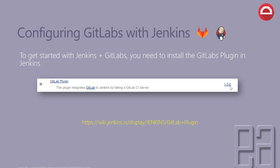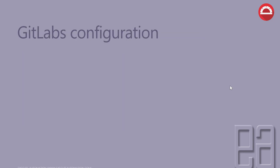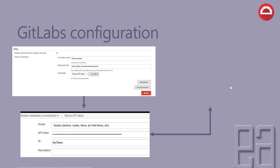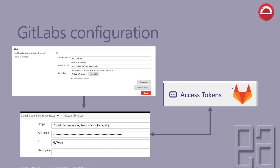To get started with Jenkins and GitLab, you need to install the GitLab plugin within Jenkins under the Manage Jenkins option. Configuring GitLab is much easier as well — all you have to do is create a git connection by providing the GitLab host URL, then create a credential token. The credential token is obtained from the GitLab UI or portal, and you can then use that token within your GitLab configuration. That's it — that simple.